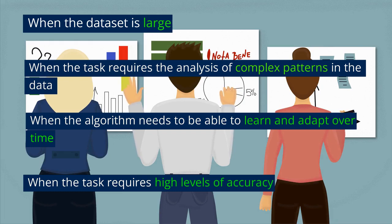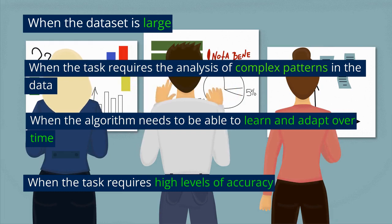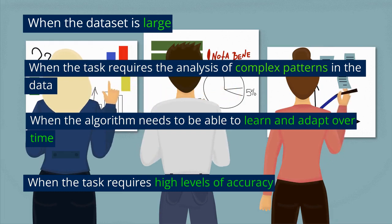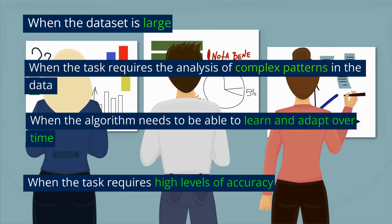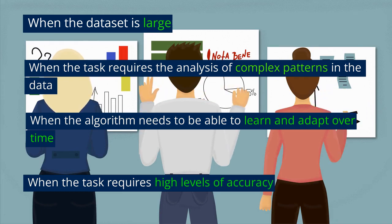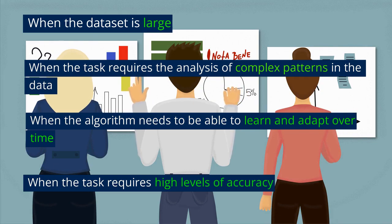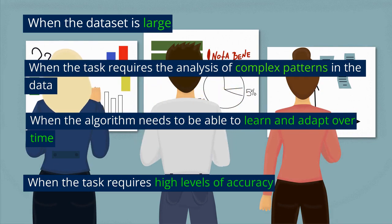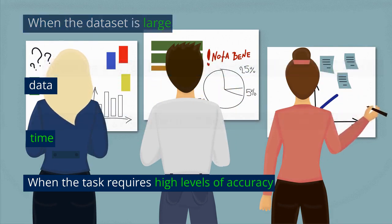When the task requires a high level of accuracy, deep learning algorithms have achieved state-of-the-art results on a wide range of tasks and can often achieve very high levels of accuracy, making them well suited for tasks where accuracy is critical.